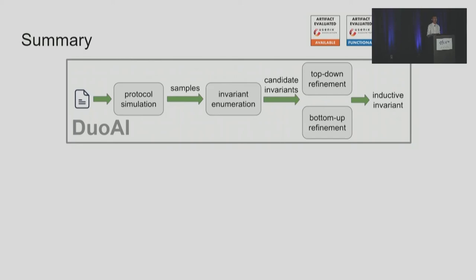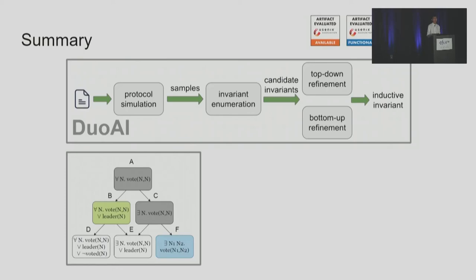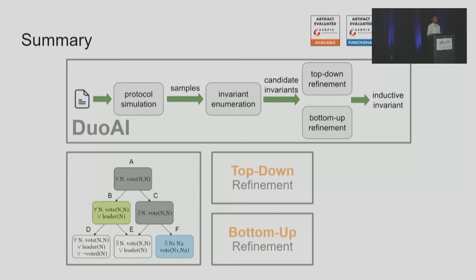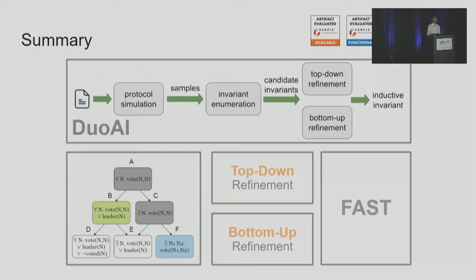In summary, we present Dual AI, an automated invariant inference tool to verify distributed protocols. We propose the minimum implication graph, candidate invariant enumeration on the graph, top-down refinement, and bottom-up refinement. Our evaluation shows that Dual AI solves more protocols and runs faster than alternative methods. Thank you for listening.